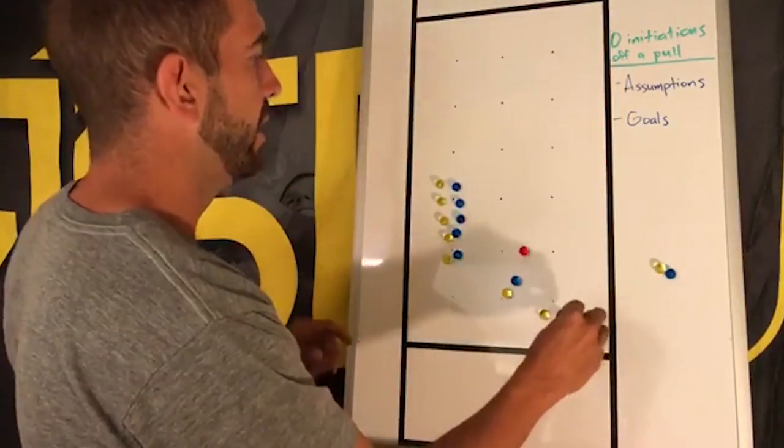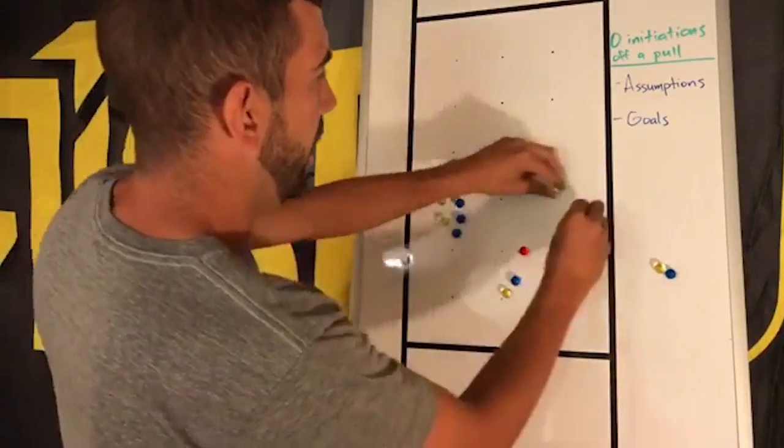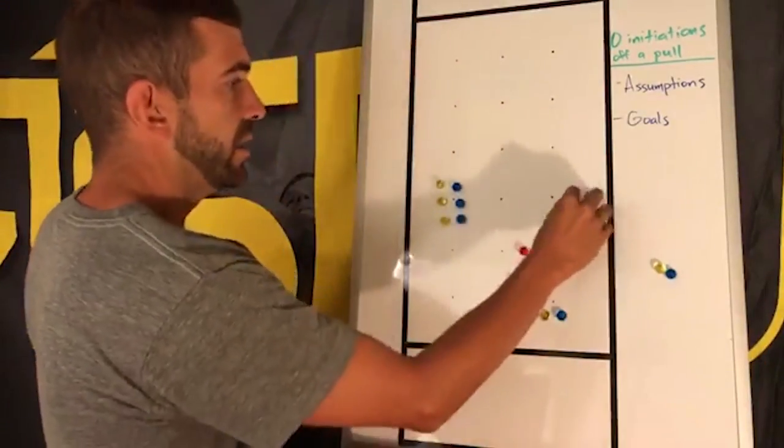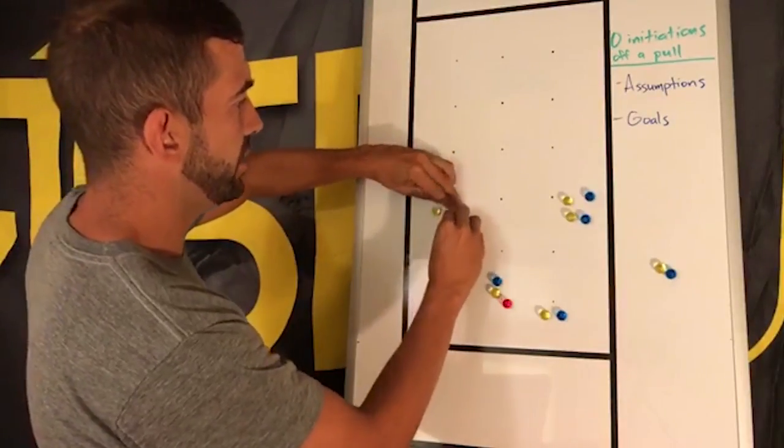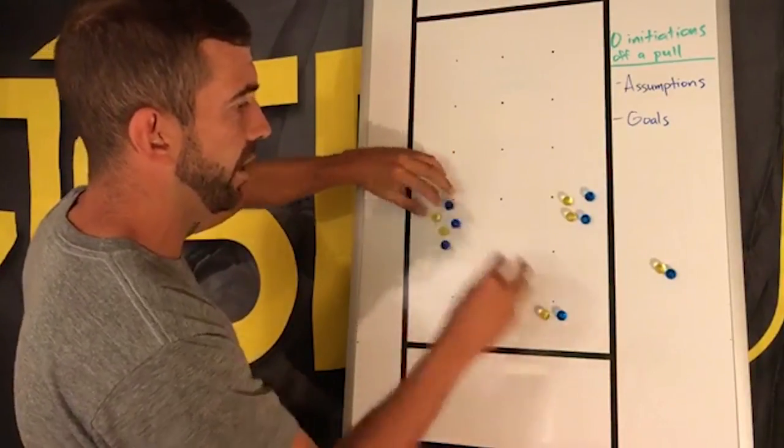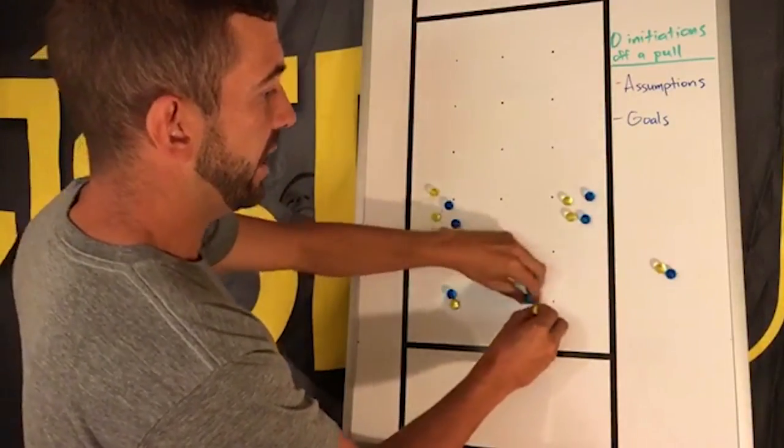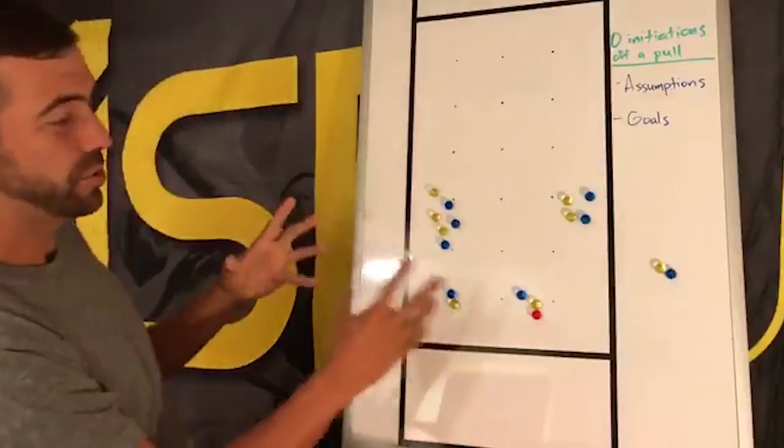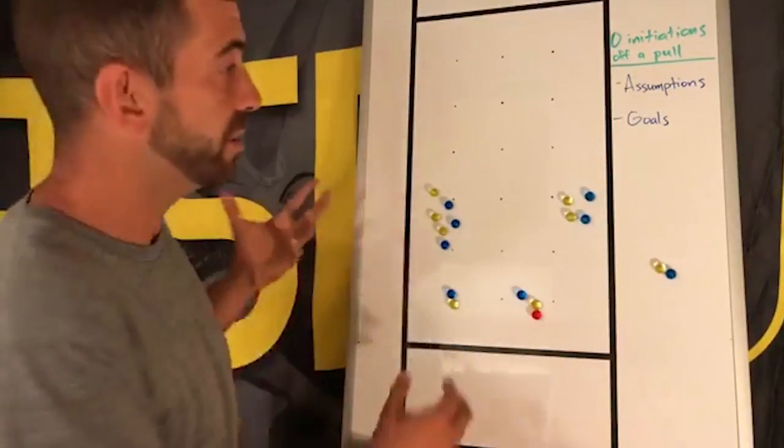Let's take another different formation. This is a split stack formation. You've got three players on one side and two players on the other. One of the benefits of a split stack is there's less sort of stereotypical handlers in the handler space. So that's how it creates space.